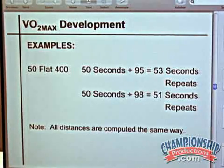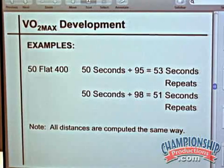A 98% VO2 max workout at the same speed would give you 51-second repeats. I remember vividly telling you people that I would run my people four times a quarter, and if they could average 51 seconds, they could break four flat. Here's proof in the pudding right here. All distances are computed the same way — you get their PR and divide by the intensity that you are trying to get out of them.